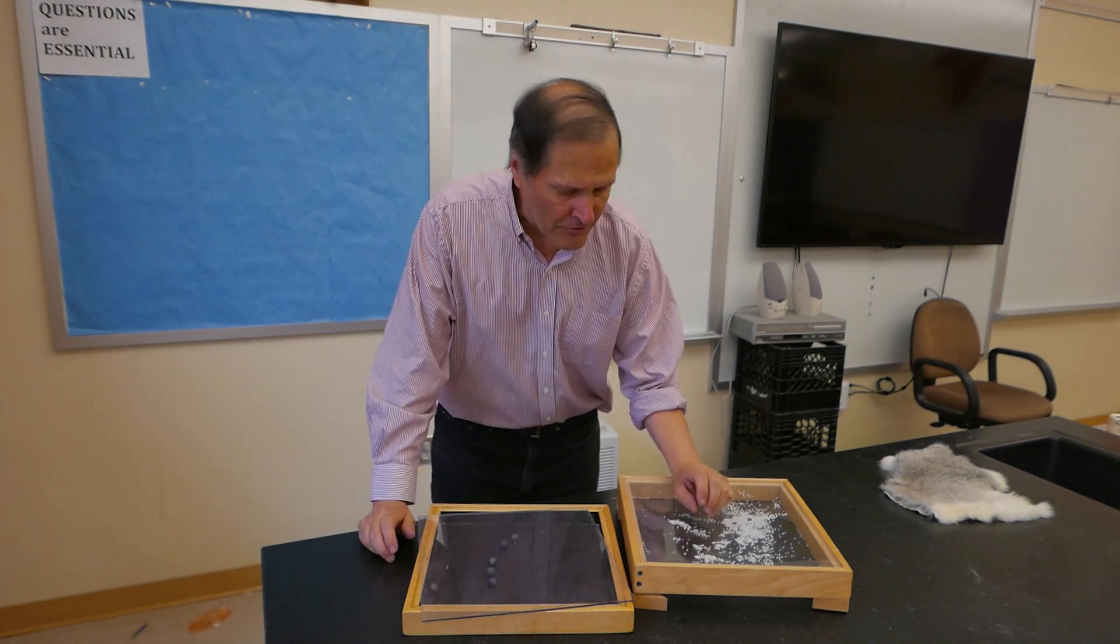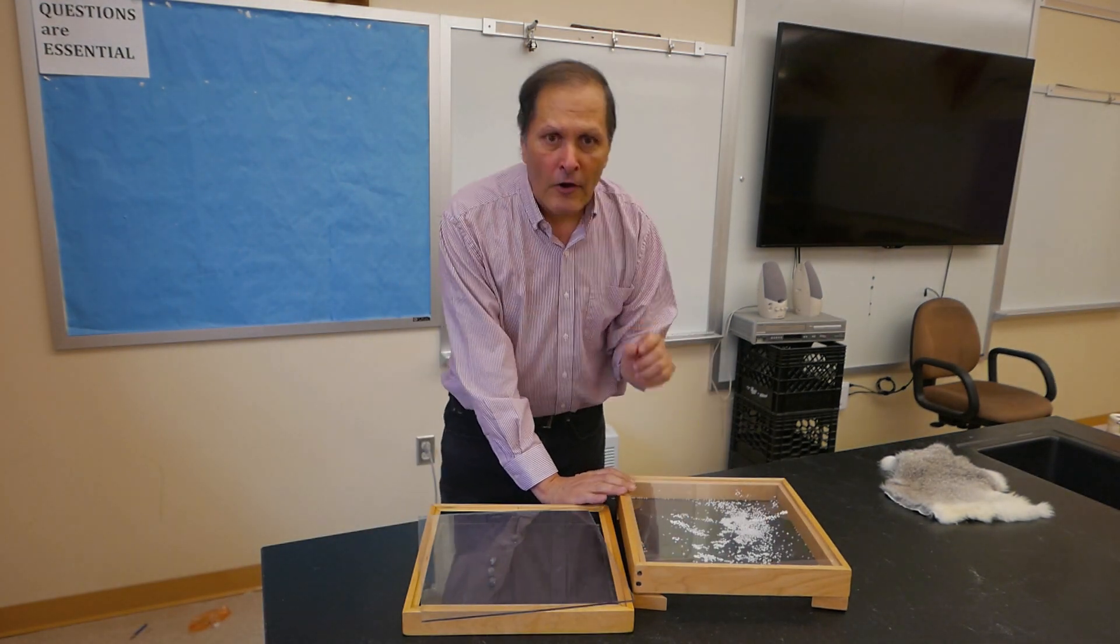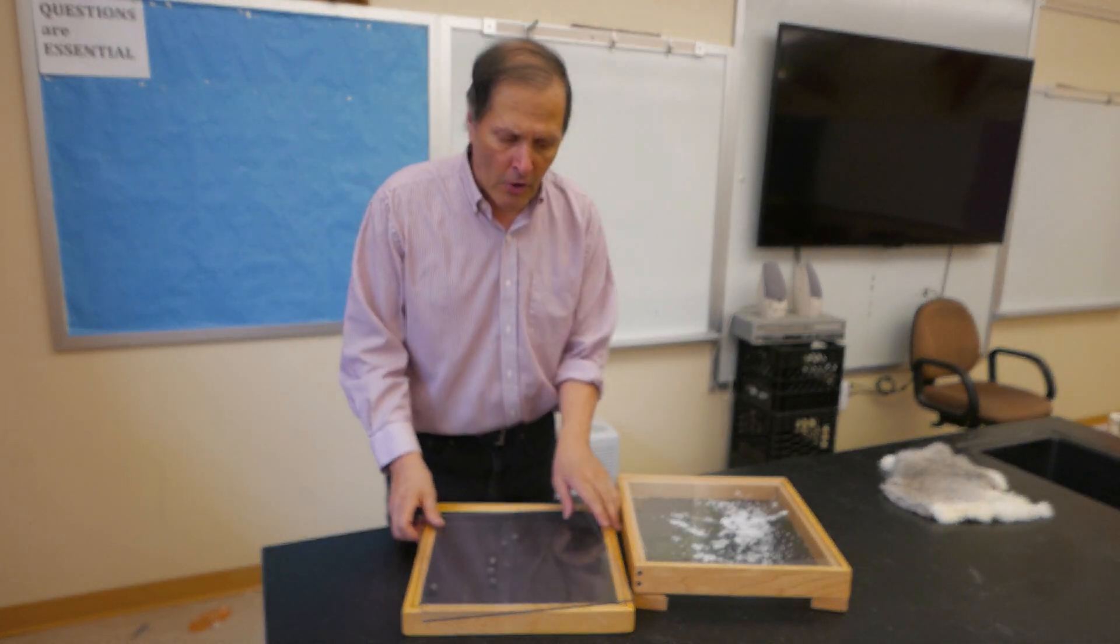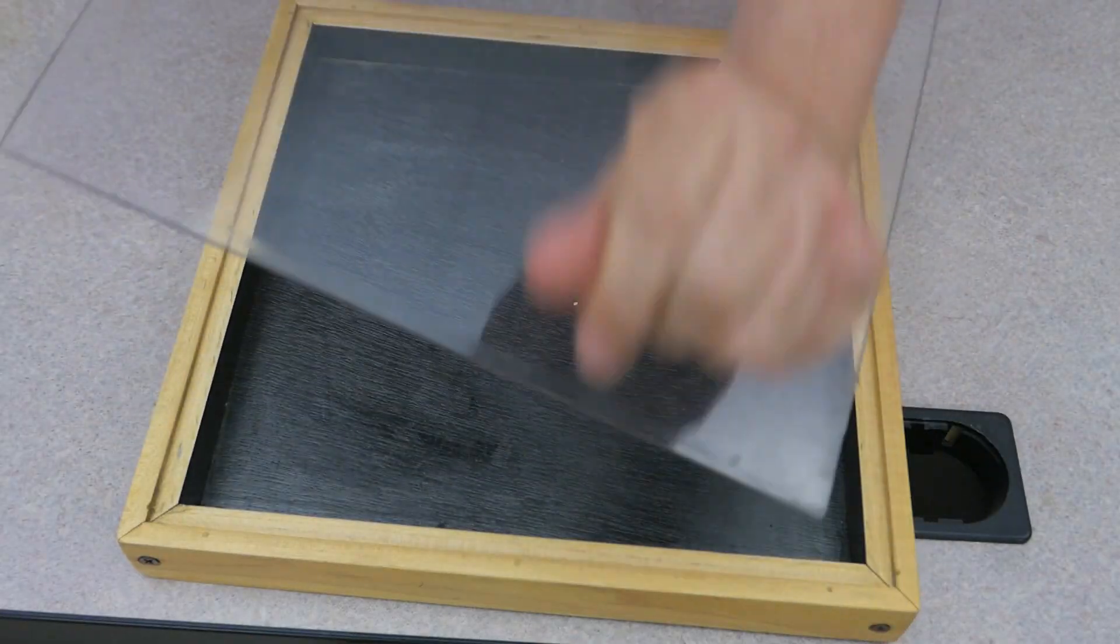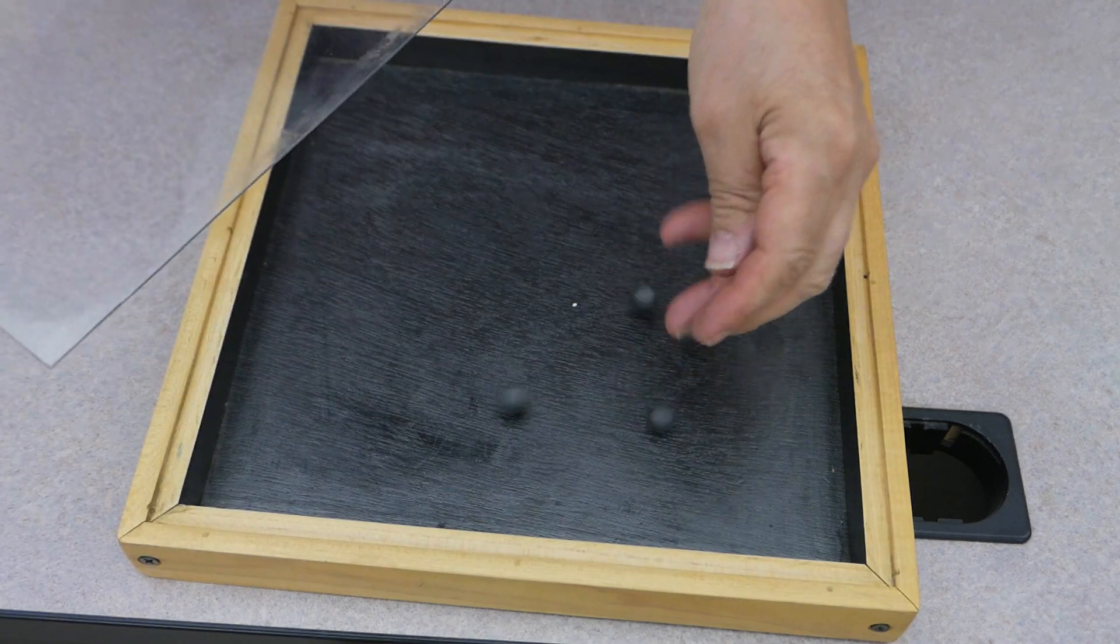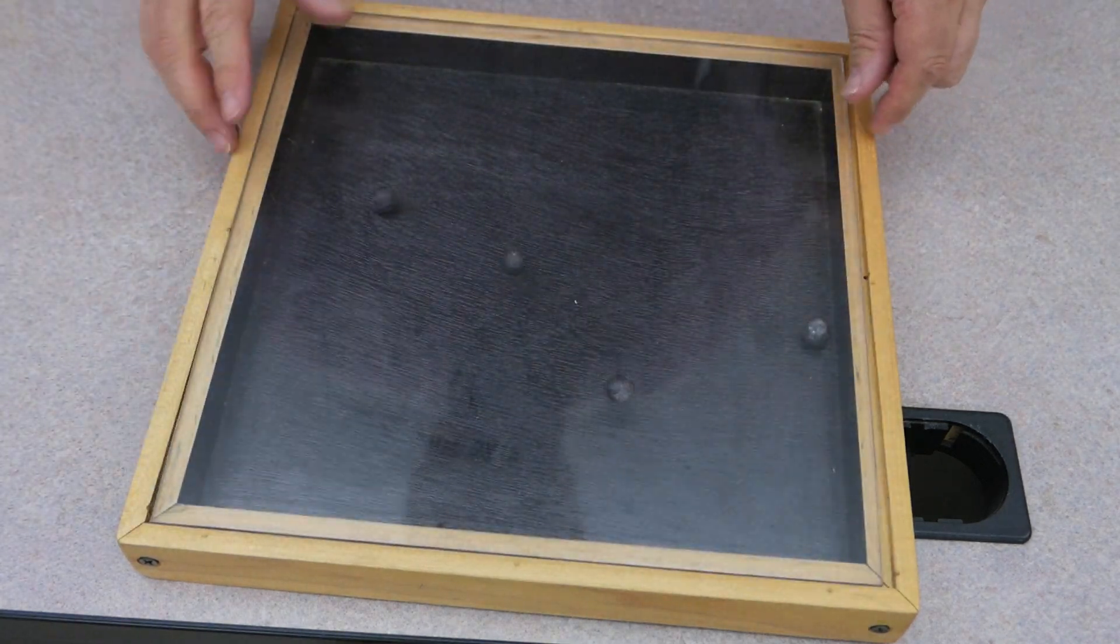Now the static boxes I showed in a previous video also depended on the triboelectric series to get its static charge. All I had to do was rub my forearm against the plastic. In doing so, my arm gives up electrons, making the surface of the plastic positively charged.